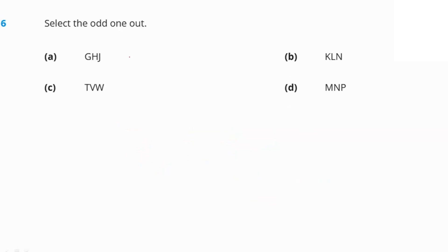Select the odd one out. The pattern in options A, B, D is: a letter, then the next consecutive letter, then skipping one letter (e.g., G, H, J — skipping I; K, L, N — skipping M; M, N, P — skipping O). But in option C, the sequence T, U, W, V doesn't follow this — W and V appear in the wrong order. So option C is the odd one out.